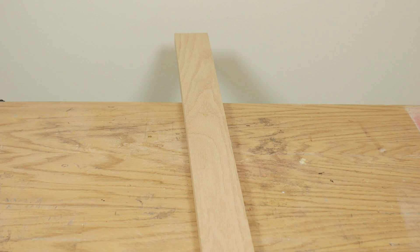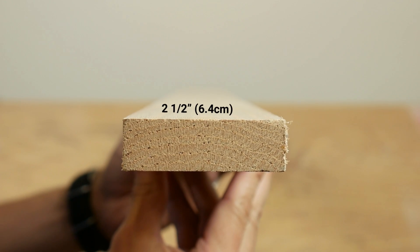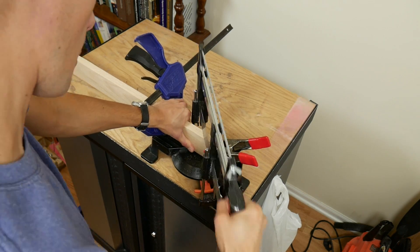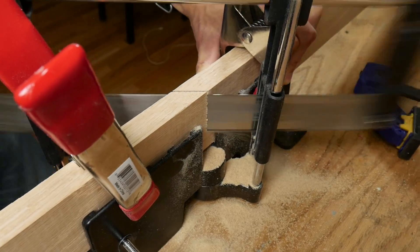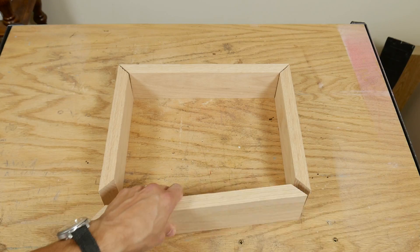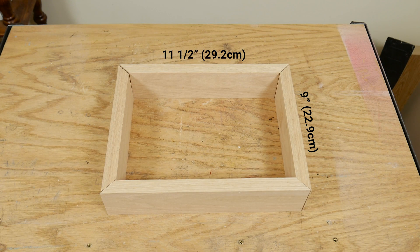To make a frame for everything I got a piece of oak from a home improvement store. It was two and a half by three quarter inches. I cut four mitered pieces. Two were nine inches long on the outside and two were eleven and a half inches long on the outside.